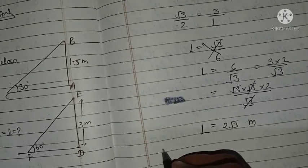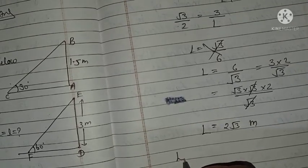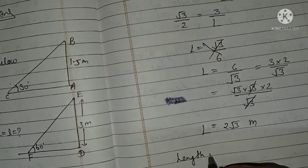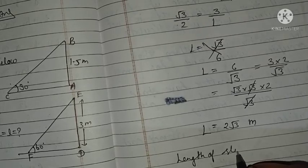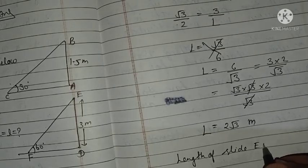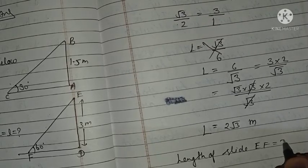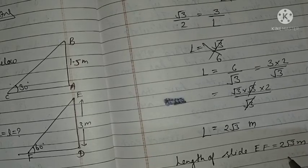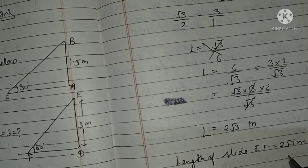Length of slide EF equals 2 root 3 meters. That is the ending of this video. Thank you.